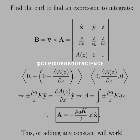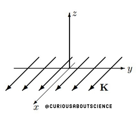We set that equal to the magnetic field and solve for A by integrating with respect to z. We clearly see that A is equal to negative mu-naught k over 2, with the absolute value of z. Again, it switches at z equals 0, pointing in the x-hat direction. And that's what we see graphed here with k and the magnetic potential.